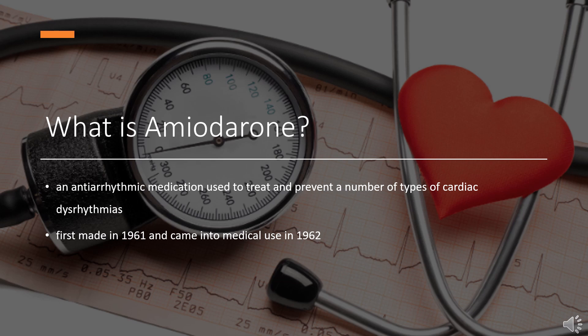Amiodarone is an antiarrhythmic medication used to treat and prevent a number of types of cardiac dysrhythmias. This includes ventricular tachycardia, ventricular fibrillation, and wide complex tachycardia, as well as atrial fibrillation and paroxysmal supraventricular tachycardia.